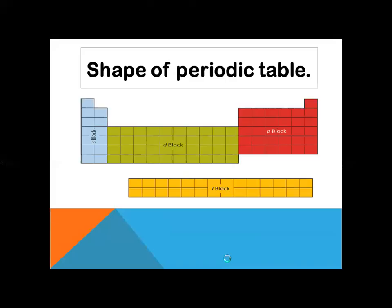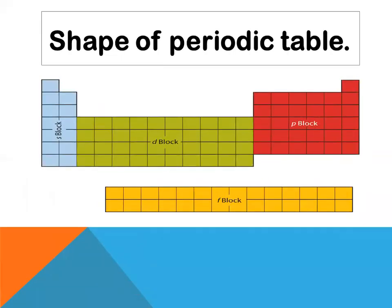Observe the diagram — you can understand the shape of the periodic table. Elements are arranged in increasing atomic number. If we write the electronic configuration of any element, we observe that the valence electronic configuration will end at one of the subshells. If the subshell is s, it is placed in the s block; if it ends at p, it is placed in the p block; if it ends at d, it is a d block element; and if it ends at f, it is considered an f block element.